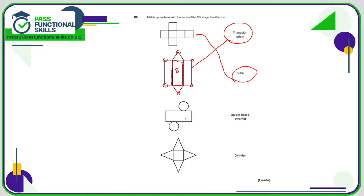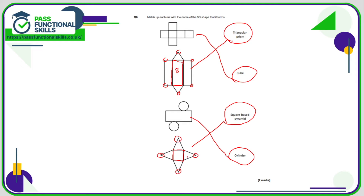Here we've got a rectangle with a circle on top and a circle on the bottom, so that will form a cylinder — the cylinder is the only shape that has two circular faces. Here we've got a square base with four triangles — obviously it's the square-based pyramid. If we fold here, here, here, and here and pull all the triangles towards us, the tips of these triangles will all meet together and form that lovely pyramid shape.